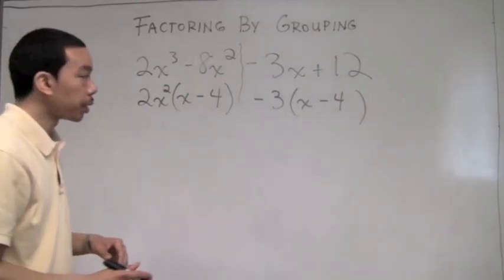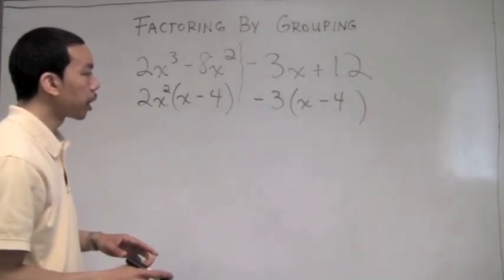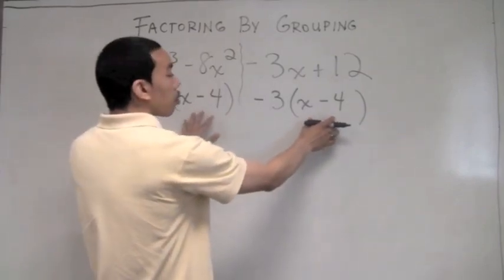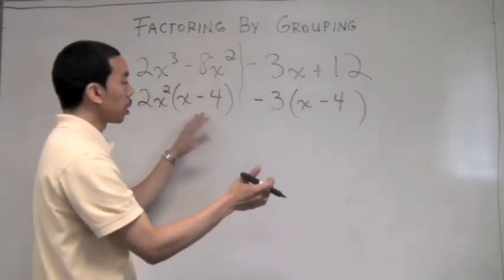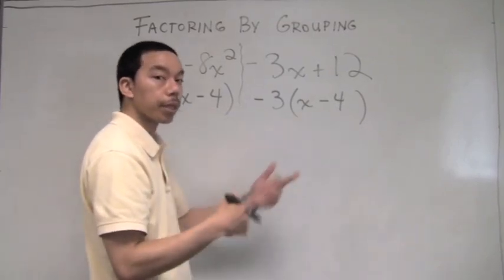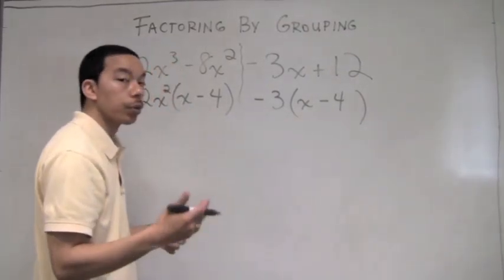In factoring by grouping, the next step is to look at and be very careful with if the terms in the parentheses repeat themselves. And we see, yes, they do. x minus 4 and x minus 4 is repeating itself. Therefore, we know we're on the right track.